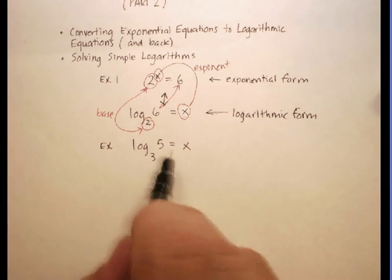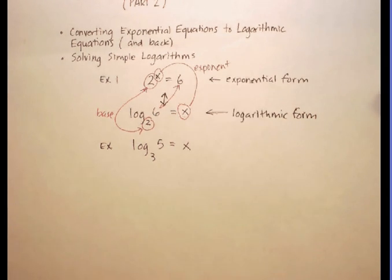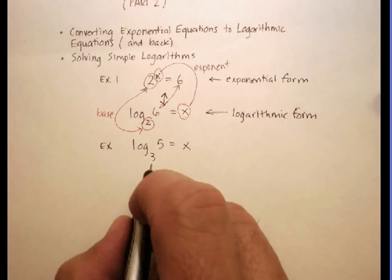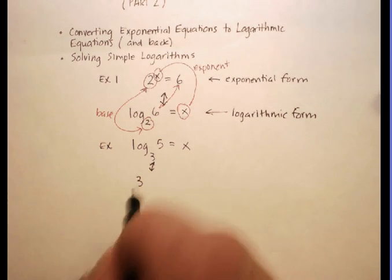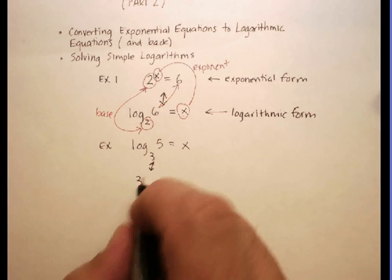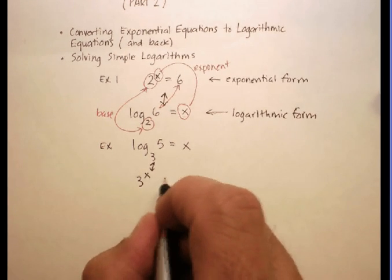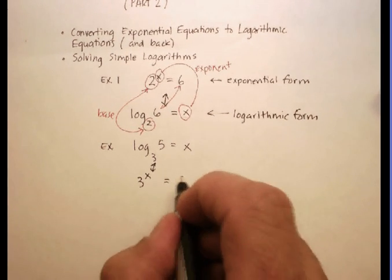How could I change that to the exponential form? Well, let's see. We said the base goes first, and the base is right there. The exponent goes to the outside. So let's say 3 to the x is equal to 5.